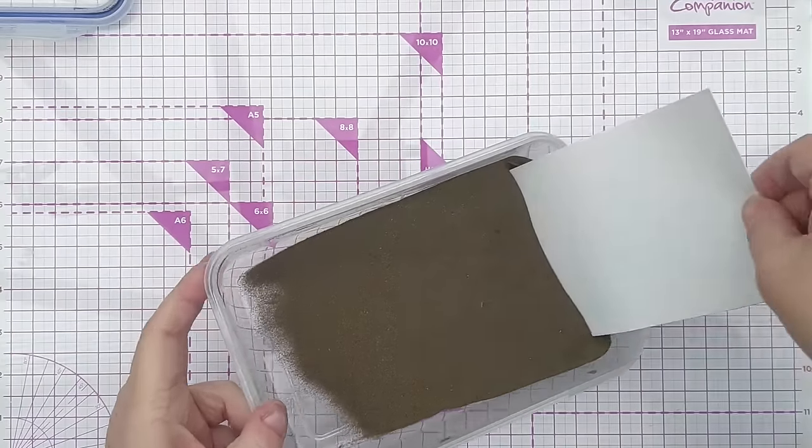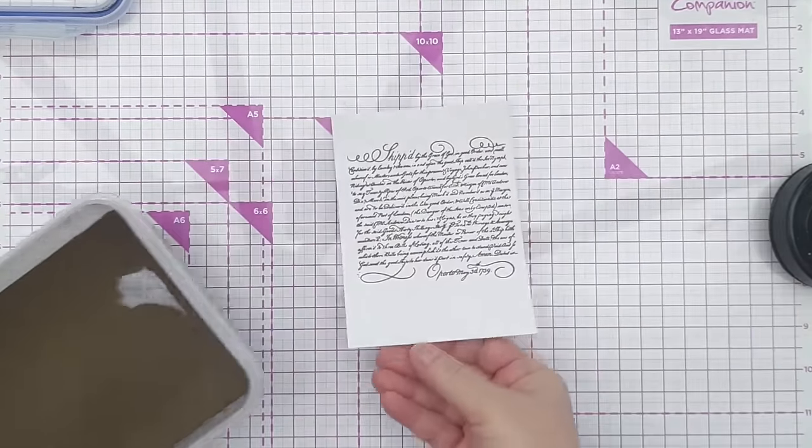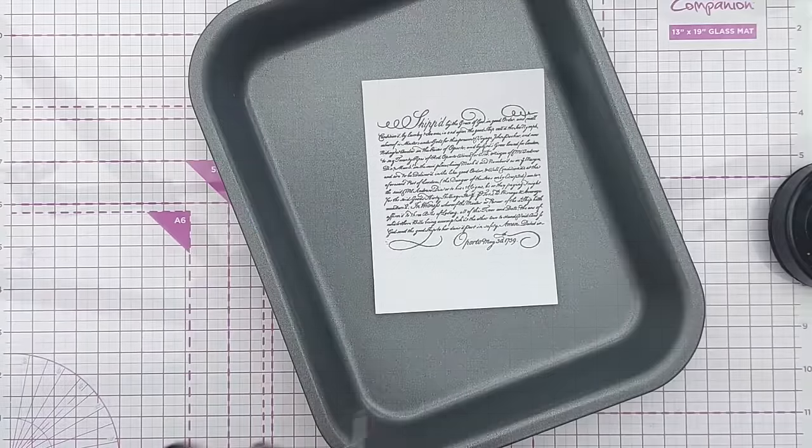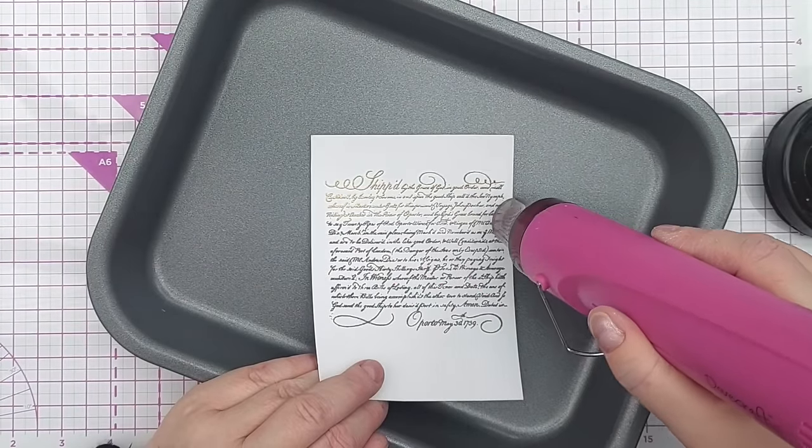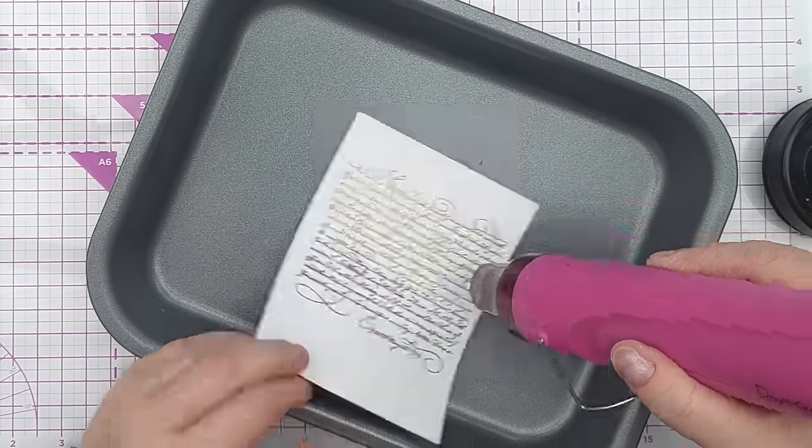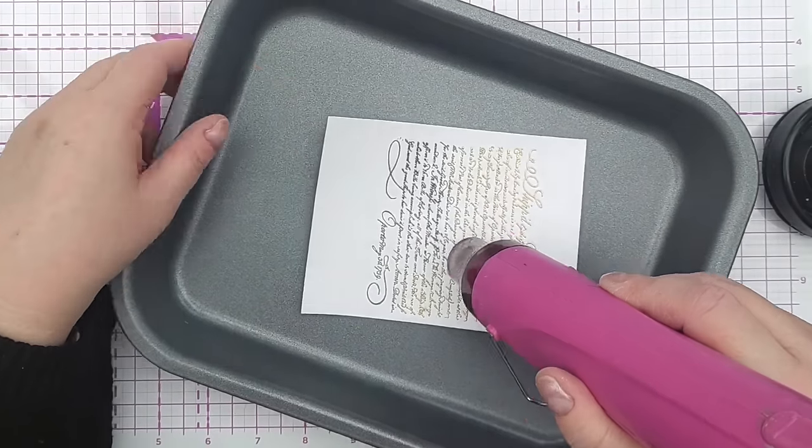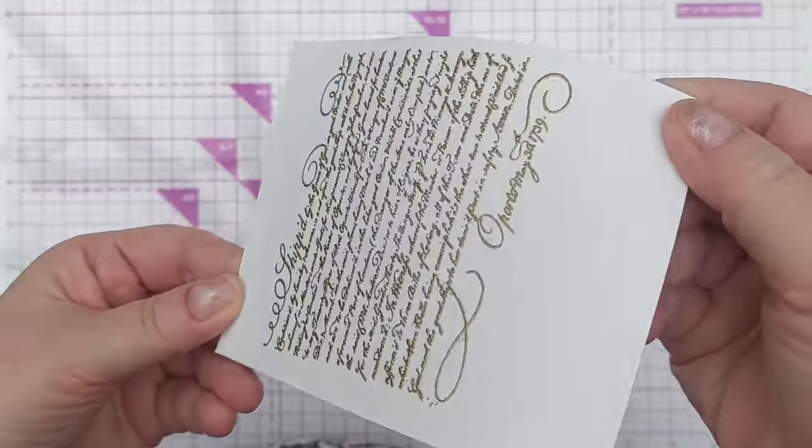Now we're going to dip it in my gold embossing powder. That looks good and heat it with a heat tool. Then we have some lovely gold heat embossing.